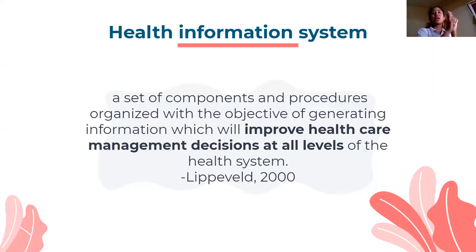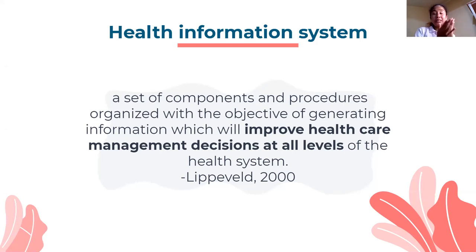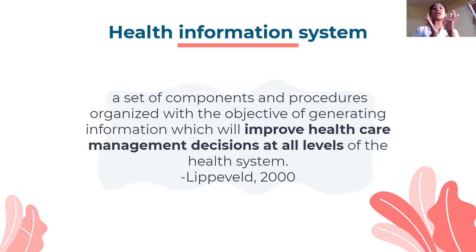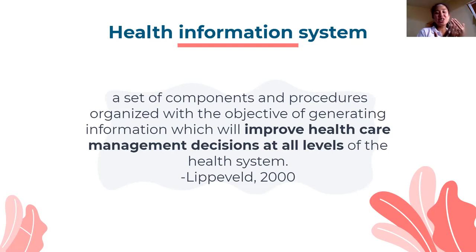Health information systems are a set of components and procedures organized with the objective of generating information. When we say health information systems, yes, it can be software, but it's not only software and not only computers — it also involves people. Components and procedures that people and machines can do, with the objective of generating information which will improve healthcare management decisions at all levels of the health system, according to Life of Health 2000. In simple terms, health information systems are so valuable because they produce valuable information for our health professionals to decide better on health outcomes.